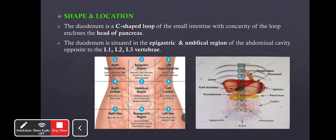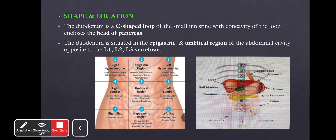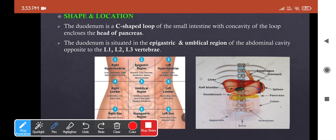Going for the shape and location: the duodenum is a C-shaped loop of the small intestine with its concavity enclosing the head of the pancreas. It is located in the epigastric and umbilical regions of the abdominal cavity. We know the abdominal cavity is divided into nine quadrants: right hypochondriac, epigastric, left hypochondriac, right lumbar, umbilical, left lumbar, right iliac, hypogastric, and left iliac region.